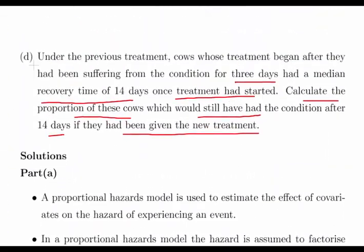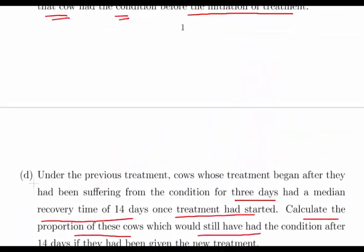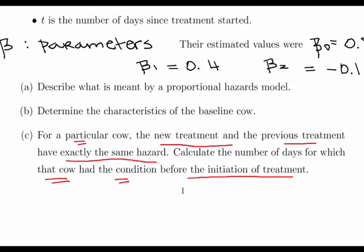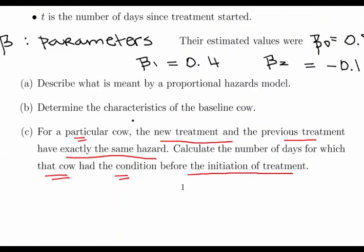Let's just read the question properly again. For a particular cow, the new treatment and the previous treatment have exactly the same hazard — calculate the number of days for which this cow has had the condition before the initial treatment, which is 8 days.